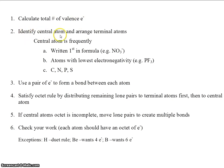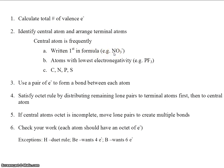Next, identify the central atom and arrange terminal atoms. Remember, the central atom is in the middle; terminal atoms are around the outside. Here are some tips: usually the central atom is written first. For example, in this problem, nitrogen would be the central atom. Oftentimes, central atoms are atoms with the lowest electronegativity — in this case, it's phosphorus. Notice phosphorus is also written first.